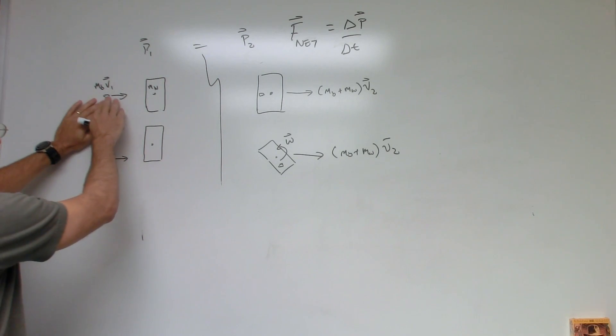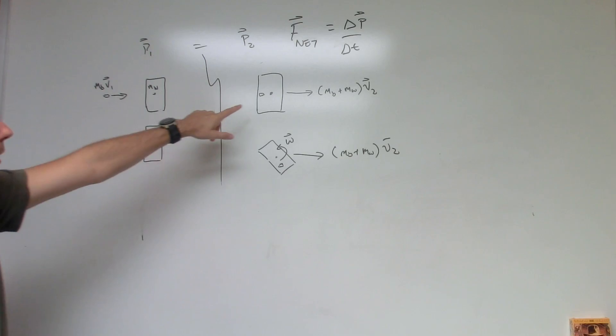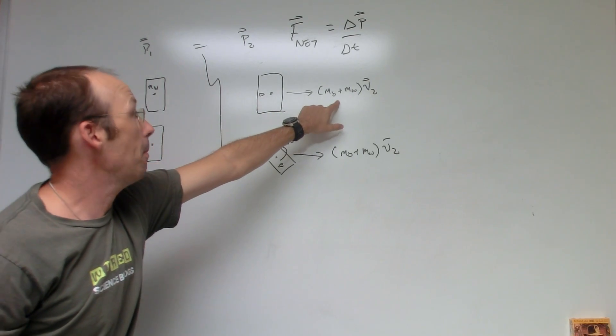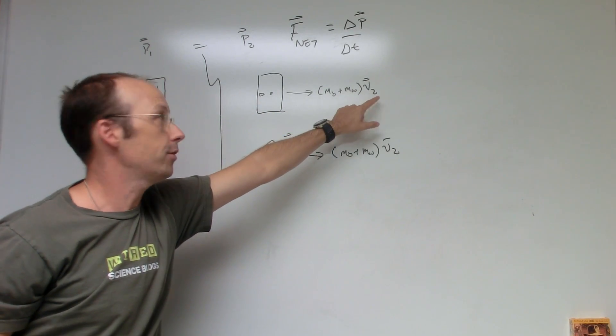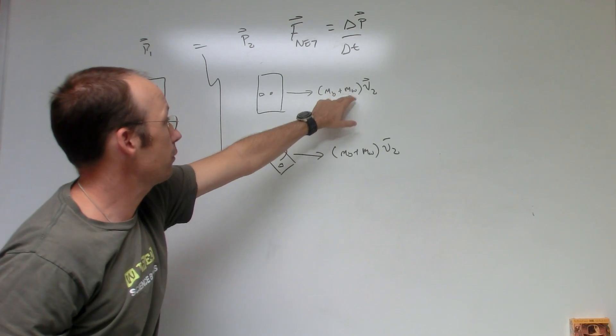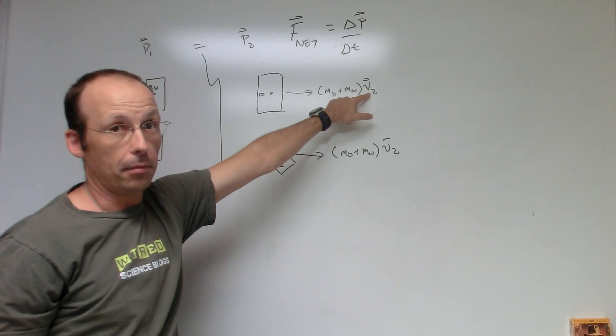So whatever the momentum was before, I call it P1, is the momentum afterwards, P2. So before I have mass of the bullet times V1, and then afterwards I have the mass of the bullet and the wood times V2, and those have to be equal. Since this mass is much larger, the new velocity is going to be smaller.